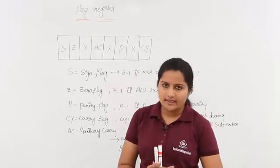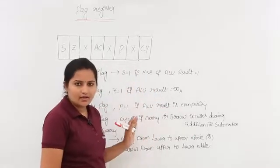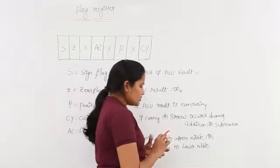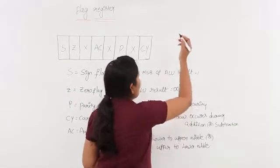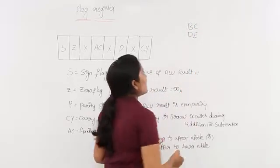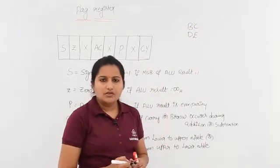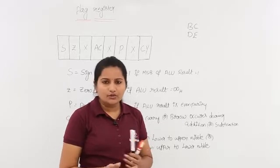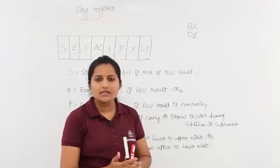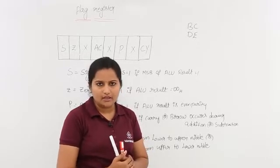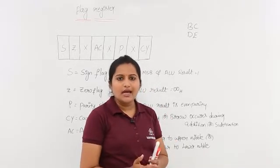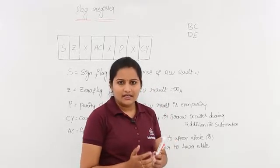Now I will show you an example which will demonstrate the sign flag, auxiliary carry, carry flag, and everything. I want to add BCDE — these are two two-digit hexadecimal numbers. You know that the value of B is 11, C is 12, D is 13, and E is 14.